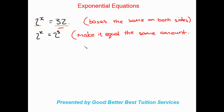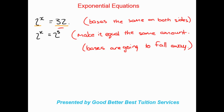Once the bases are equal to the same thing, the bases fall away. So after making the bases equal we can officially make them fall away, meaning our final answer is x is equal to 5. To summarize: first make the bases the same on both sides, then make the new base equal the same amount — in this case 32 — then the bases fall away. The x comes down from the top and 5 comes down, giving x equals 5.